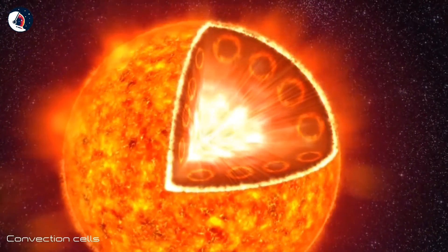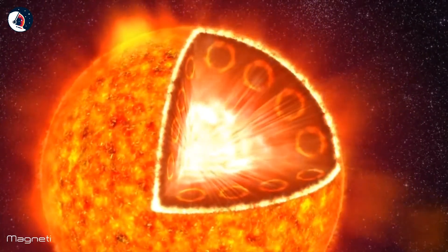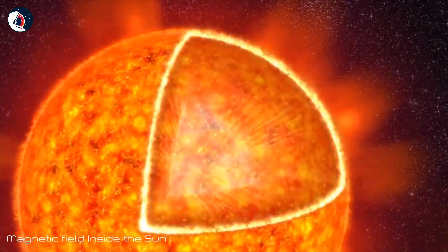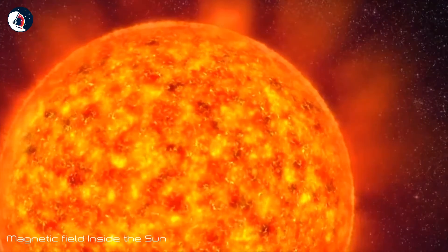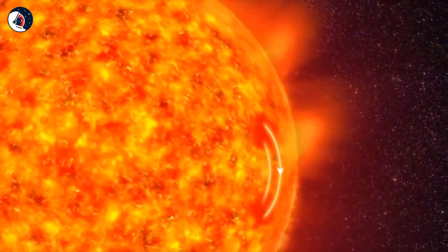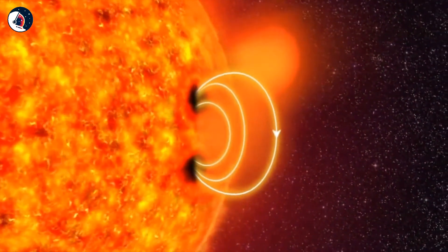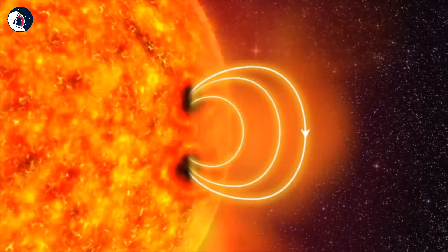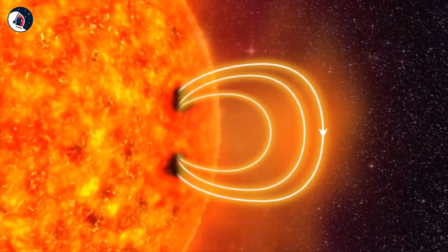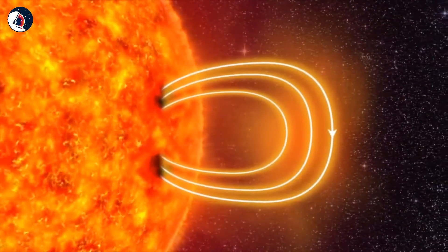These electrical currents of charged gas create magnetic fields inside the Sun. In some places, strong magnetic fields push their way up through the surface. They slow down the eddies of hot gas. The surface cools and darker sunspots appear.